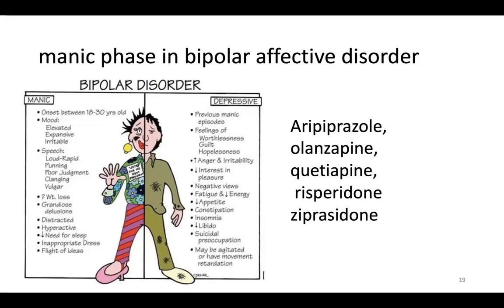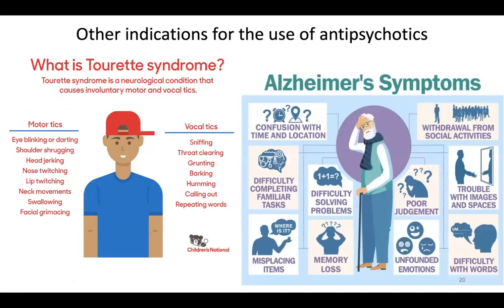The manic phase in bipolar affective disorder often requires treatment with antipsychotic agents. Lithium or valproic acid supplemented with a high-potency benzodiazepine, for example clonazepam or lorazepam, may suffice in mild cases. Aripiprazole, quetiapine, olanzapine, ziprasidone, and risperidone have been approved for treatment of various phases of bipolar disorder. Other indications include Tourette's syndrome, disturbed behavior in patients with Alzheimer's disease, and antidepressant-resistant psychotic depression.